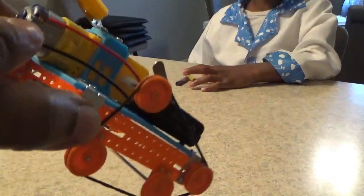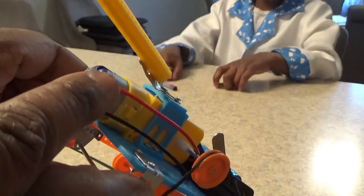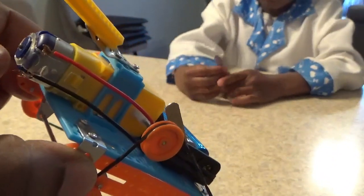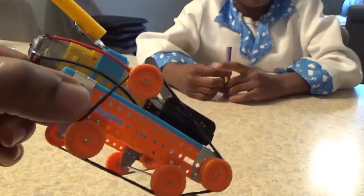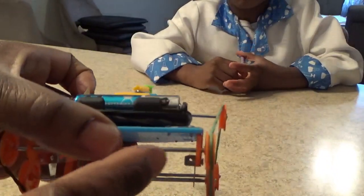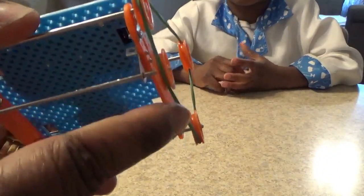So we have two double-A batteries in here, we reconnected the positive charge onto this machine, and then we added some skinny rubber bands here to get the wheels moving so that we didn't have any friction.